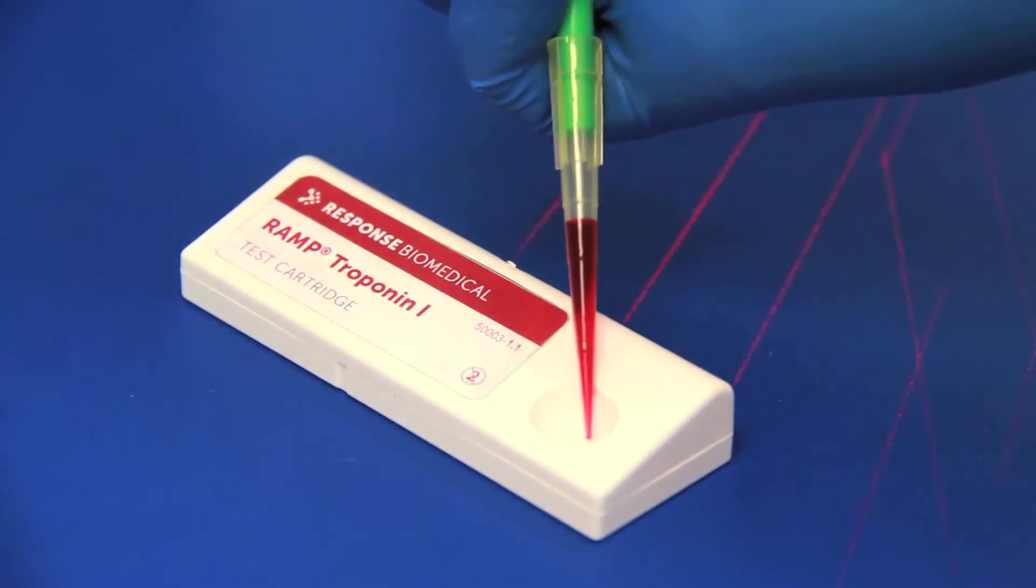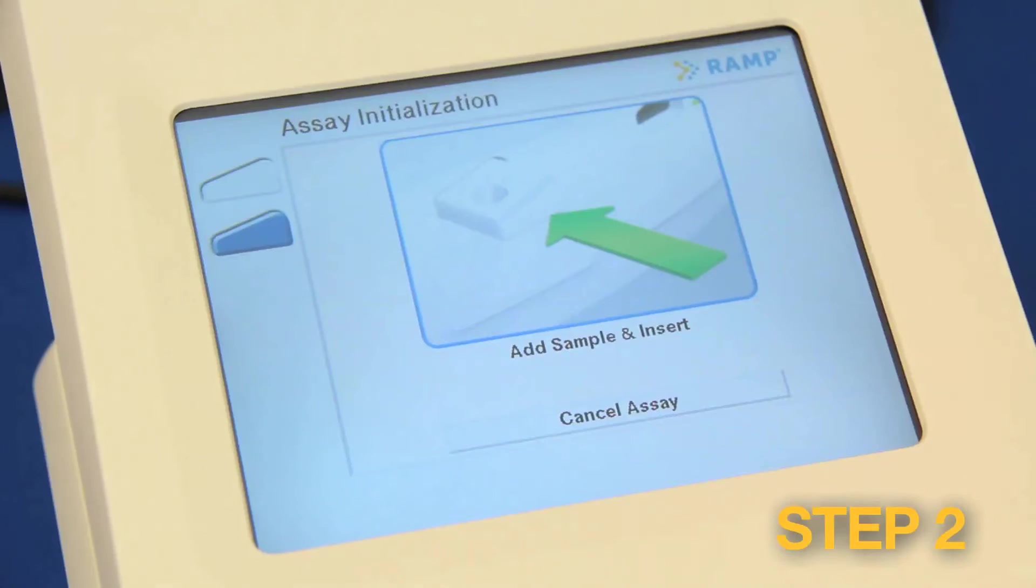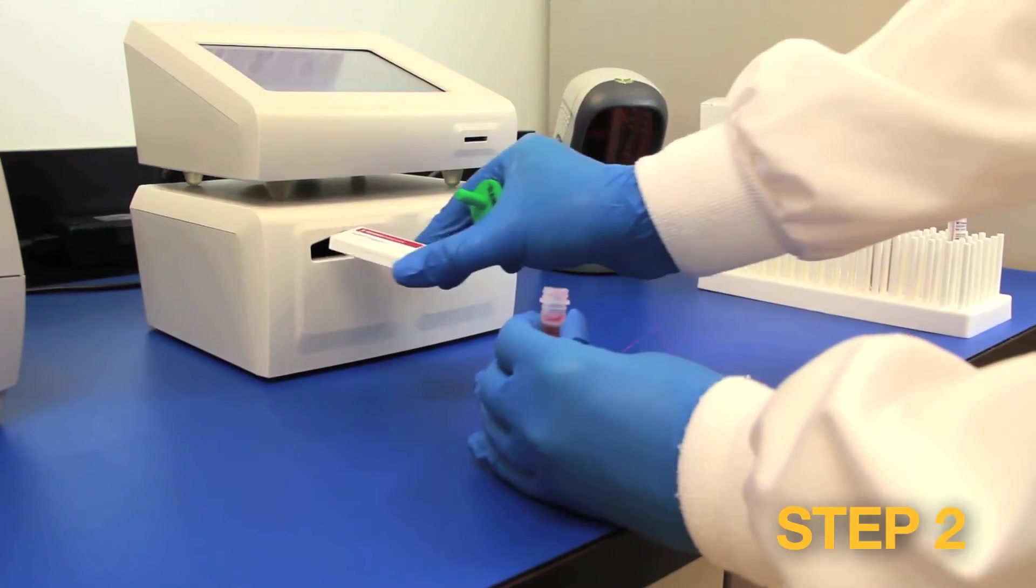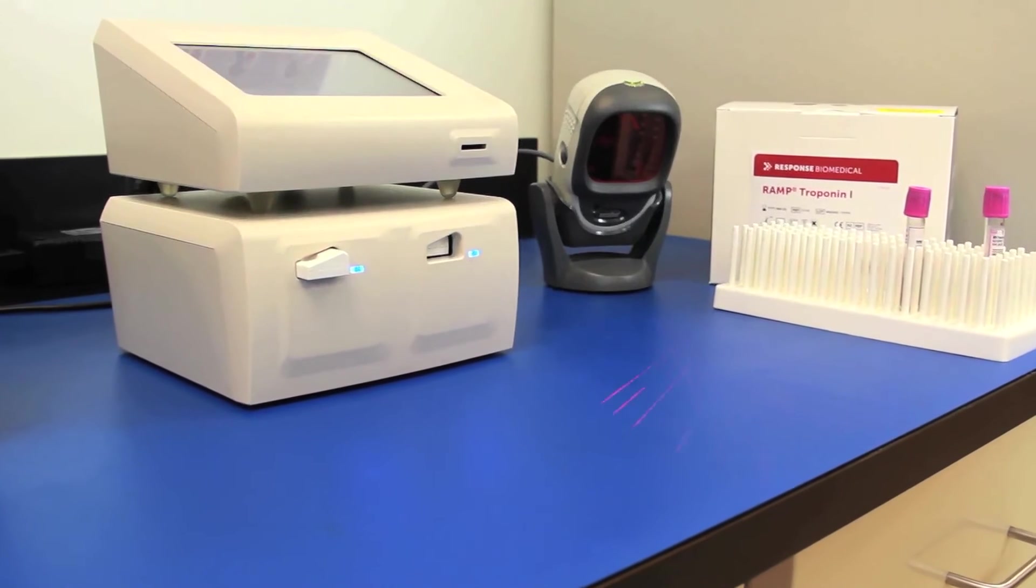Once well mixed, dispense 75 microliters of mixed sample into the cartridge well. Insert the cartridge into the appropriate port until firm resistance is felt. The reader does the rest.